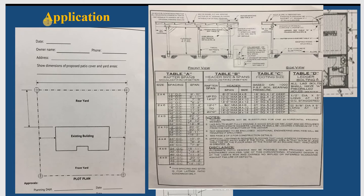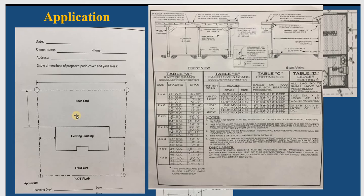Before you start to design, you need an application. You come to the city, stop by the city, ask for the application, and you fill out some information. This is one standard example. This is the existing house — that means your house — so you can ask for a patio outside here.